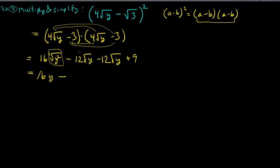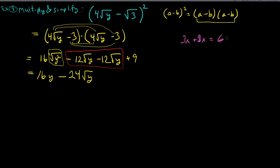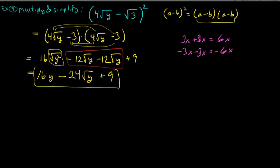The two middle terms are both −12√y, so they don't cancel — they combine: negative 12 plus negative 12 gives negative 24 times the square root of y. They're like radicals — just as 3x plus 3x gives 6x, negative 12√y minus 12√y gives −24√y. So the final answer is 16y − 24√y + 9.